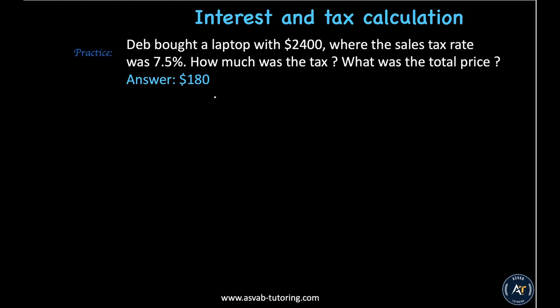To find the total price, add 525 plus 42 — that gives $567. Practice problem: Dave bought a laptop for $2,400 where the sales tax rate was 7.5 percent. How much was the tax and what was the total price? Follow the same steps. I highly recommend practicing at least three times to absorb all of these concepts.